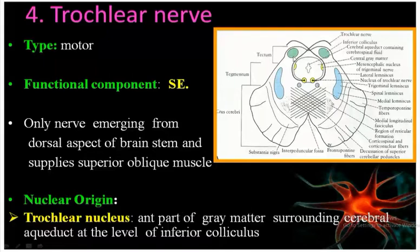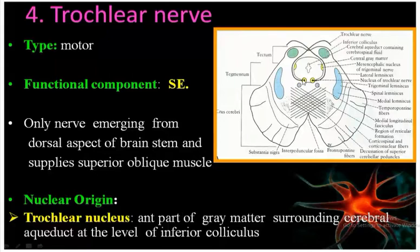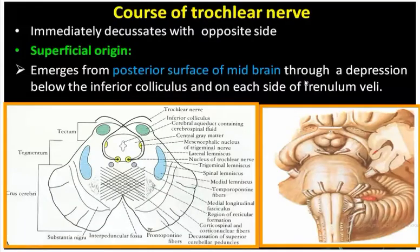The nuclear origin: in the cross-section at the level of the inferior colliculus, at the anterior part of the gray matter, you will find the trochlear nuclei. The course: it immediately decussates with the opposite side when it comes out from the posterior surface of the midbrain, then emerges from the posterior surface of the midbrain at the level of the inferior colliculus, on each side of the frenulum veli.